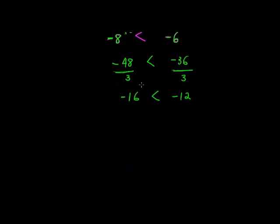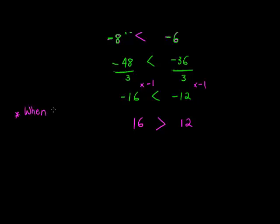What we haven't done is multiplied with a negative number. Let's multiply with negative 1. Negative times negative changes the sign, so on both sides I now get 16 and 12. Is it still true that 16 is smaller than 12? No, it's not — 16 is now larger than 12. So here's the first thing that is different: when multiplying with a negative, the sign swaps around.